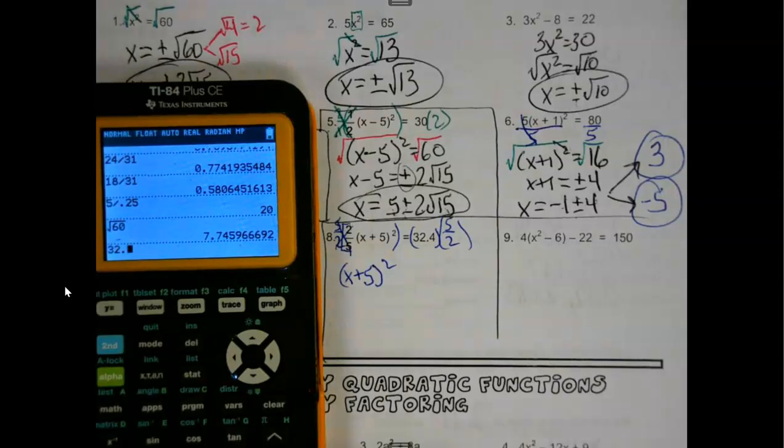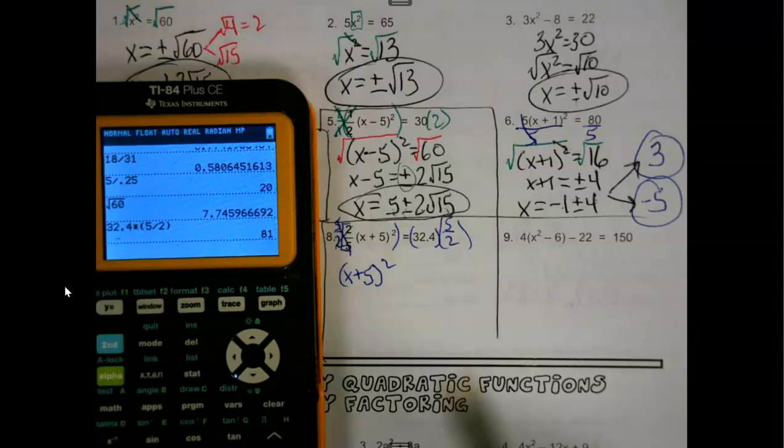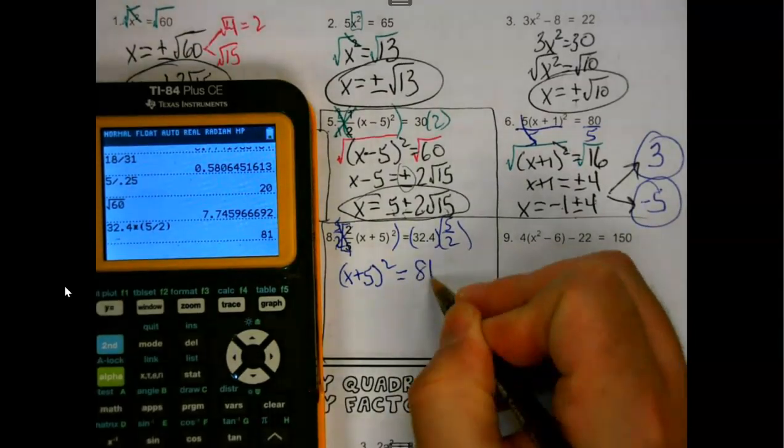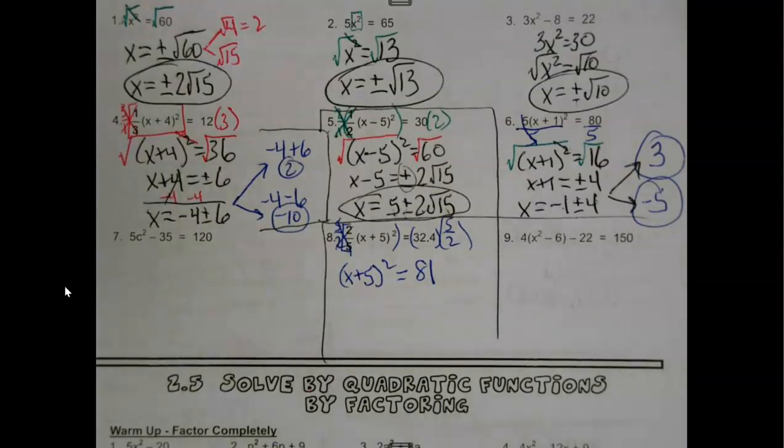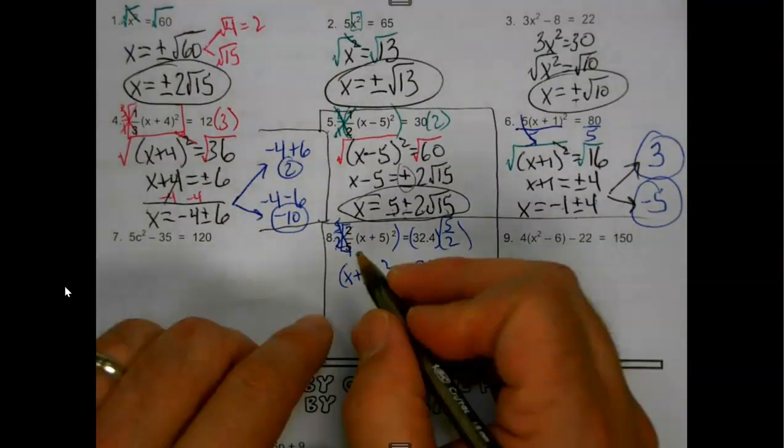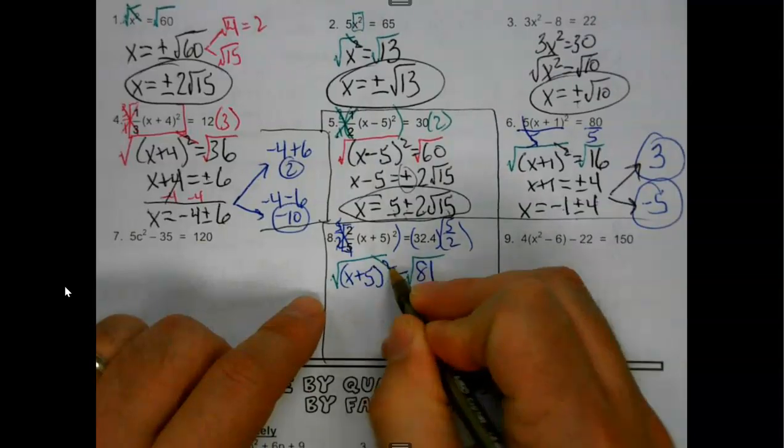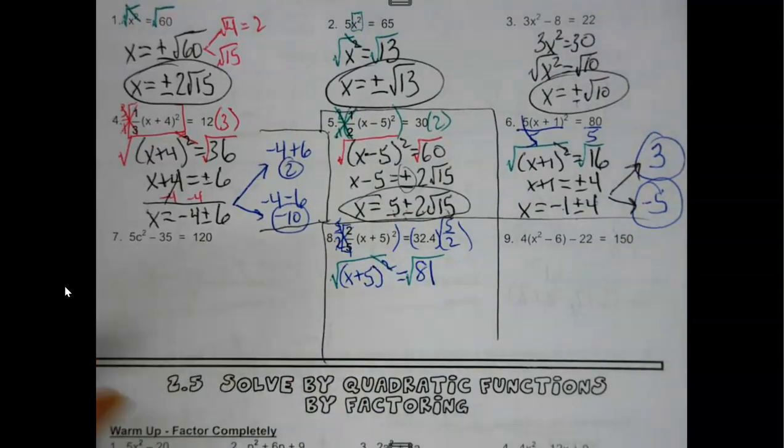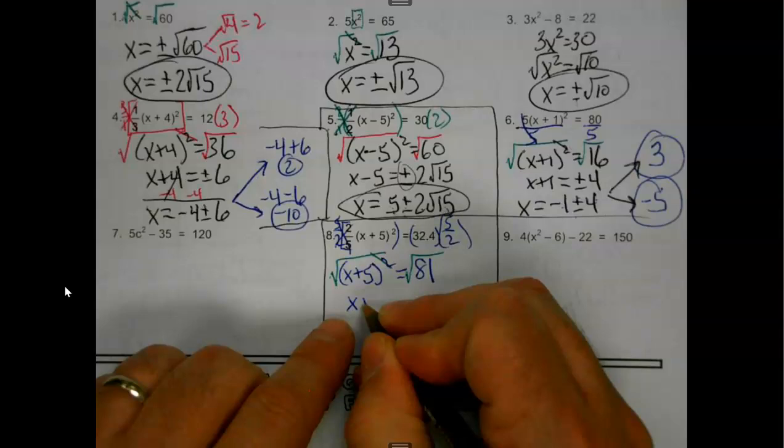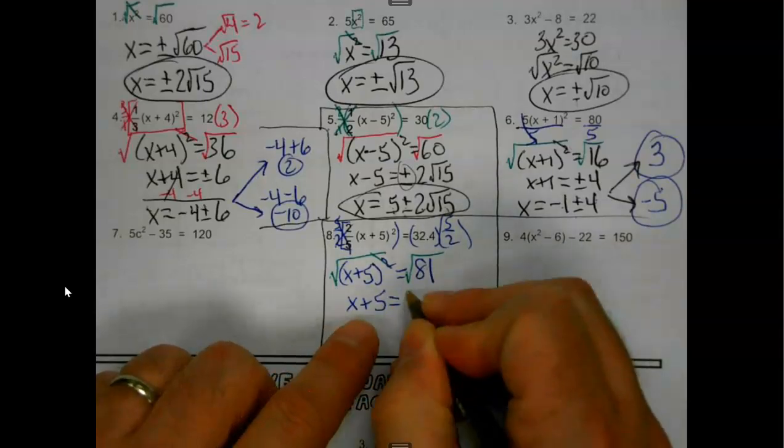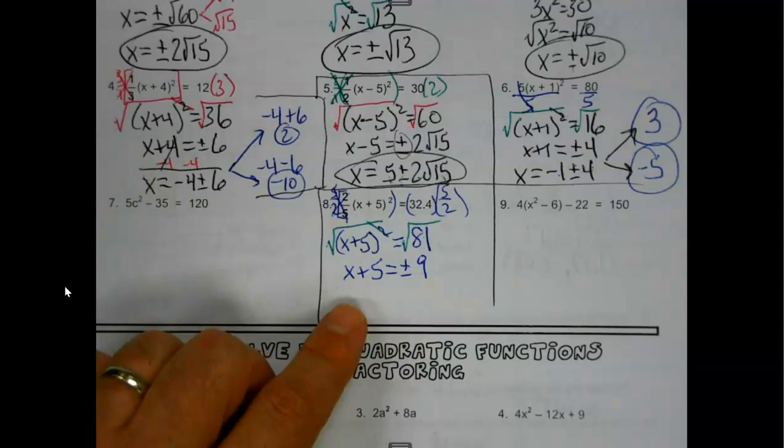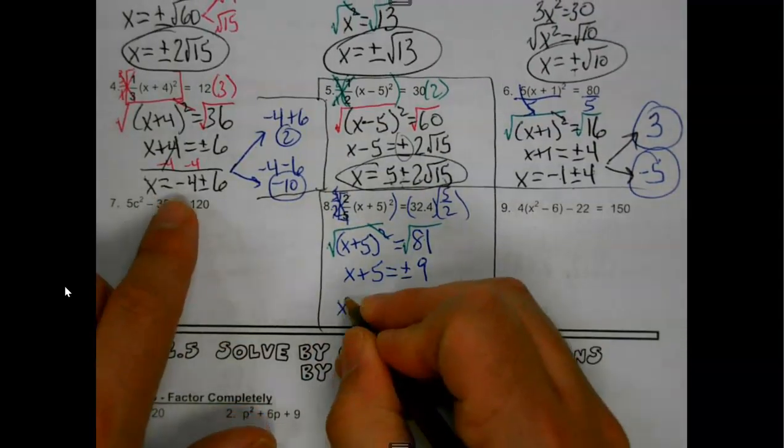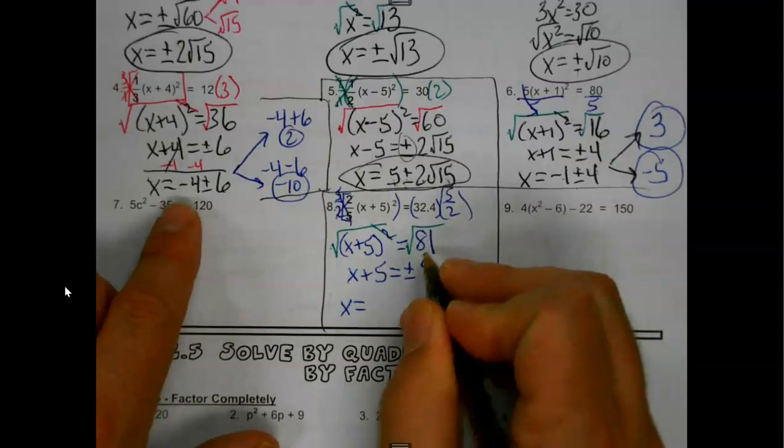Check this out. Not as bad as we thought. 32.4 times 5 over 2. See? Turned out nice. Now it's normal. It wasn't a minute ago, but now it is. Just got to stay patient. 81 is a perfect square. And we're starting to look at number 4 and number 6 staring us right in the face again. Subtract the 5 over.